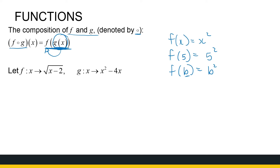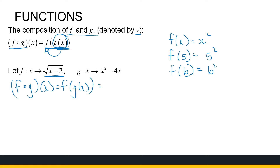So with functions f and g defined, f composition g of x is f of g of x. I like to write this step first so I know what to substitute into what. So I go to my function f, and everywhere I see an x, I now put the whole of g of x. So that's the root of x squared minus 4x, minus 2. I've substituted g of x into function f — that's f composition g.